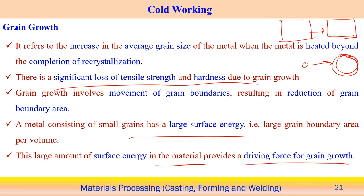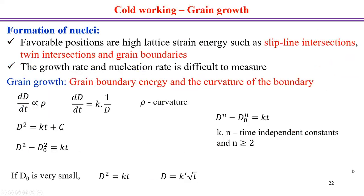When small grains are present, there is a driving force for grain growth due to the curvature effect, which causes grain boundary movement. Nucleation occurs at favorable positions — slip line intersections, twin intersections, and grain boundaries — because dislocation density is highest at those locations. Once the critical nucleation energy is exceeded, grains grow from these nuclei.